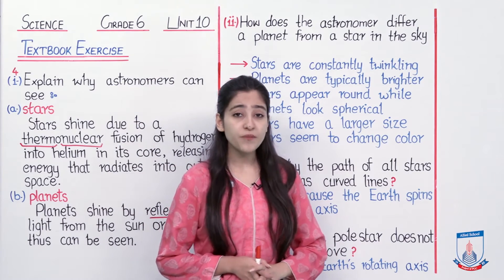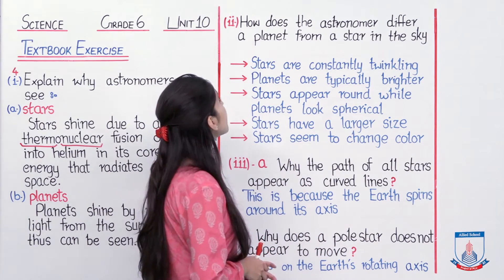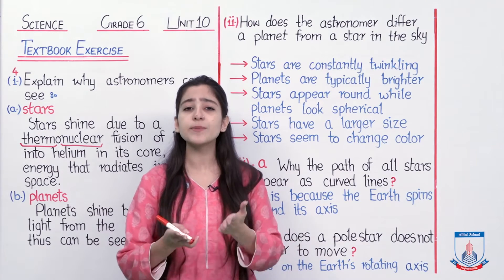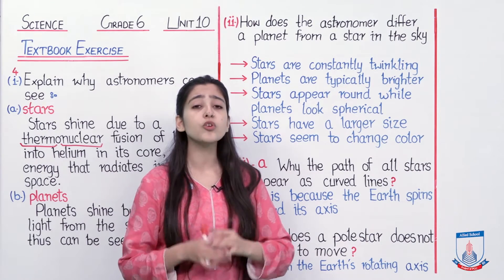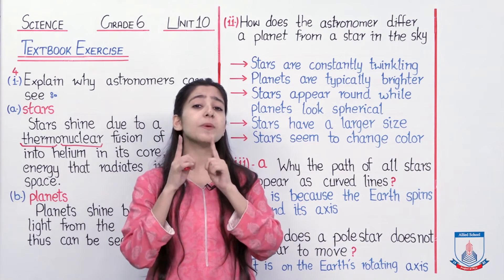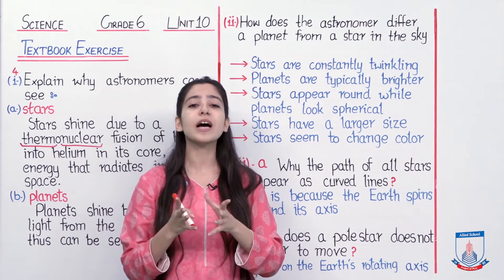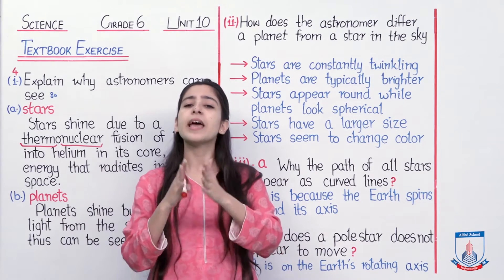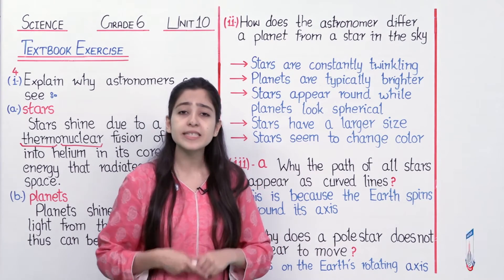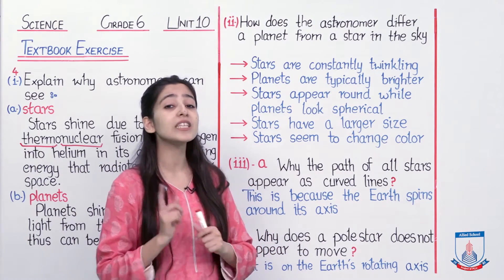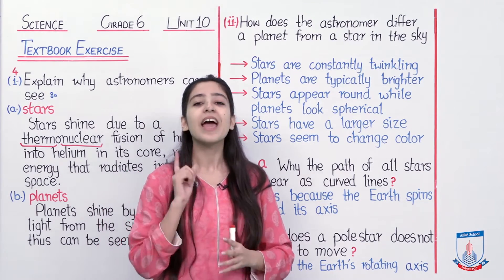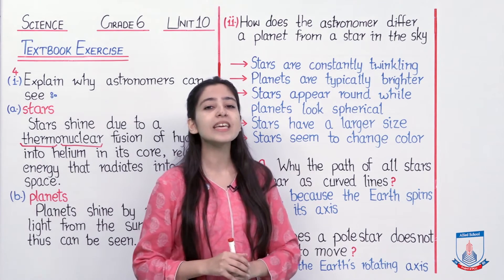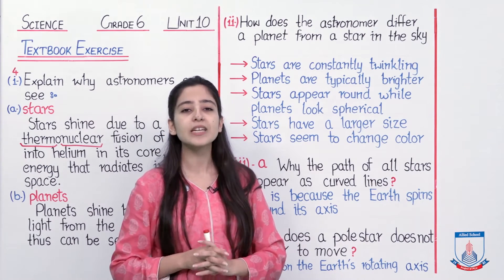So the second part of question number four is: how does the astronomer differ a planet from a star in the sky? Agar koi astronomer, ya phir koi simple banda aasmaaN ki taraf dekhta hai raat ko, toh humein kis tarhan pata chalega ke kaun si jagmagati hui cheez star hai aur kaun si jagmagati hui cheez planet hai? Hum kis tarhan differ kar sakti hain ek star ko ek planet se? Dekho dekhne mein toh humein ek jaise lagte hain, magar iski kuch techniques hain jo mein aaj aapko bataaungi, aur phir aap ghar mein experiment karenge raat ko differentiate karne mein ki kaun si star ho sakti hai aur kaun si planet.